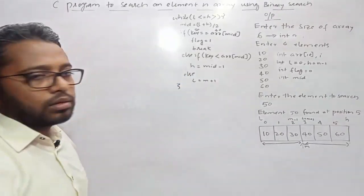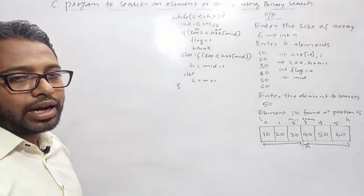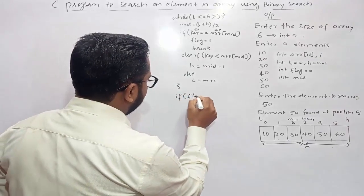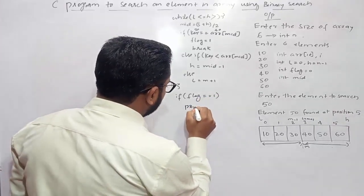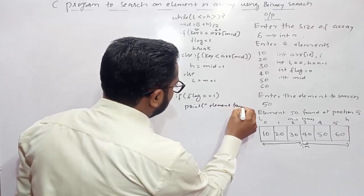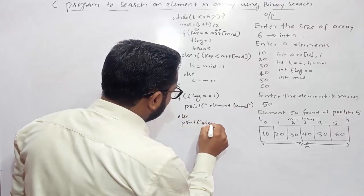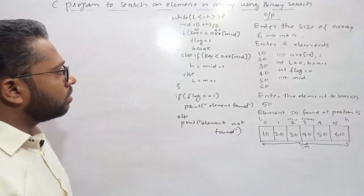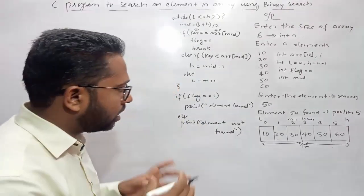We close the while loop. Initially we set the flag value to 0, and whenever we found the item the flag gets set to 1. At the end, if flag equals 1 we print that the element was found; otherwise we print element not found. This is the complete logic for finding a specific item in an array using binary search, and I hope you guys have understood how binary search works.